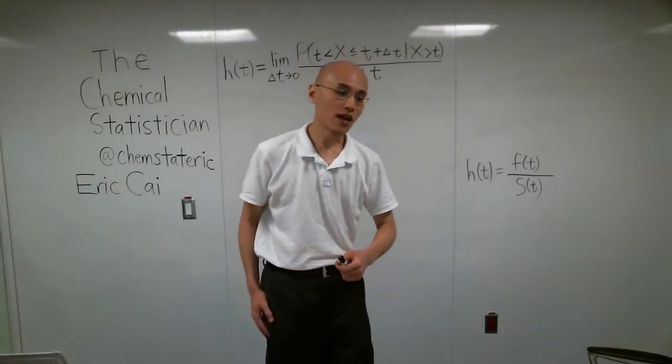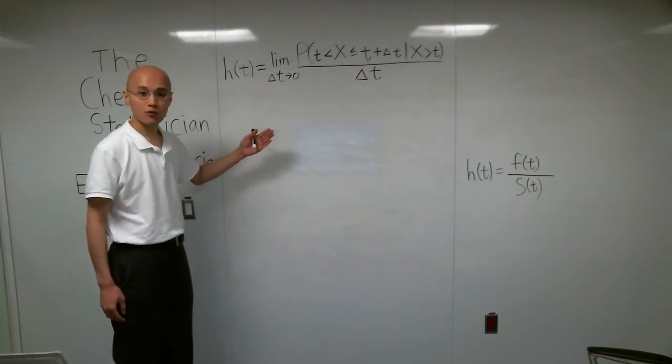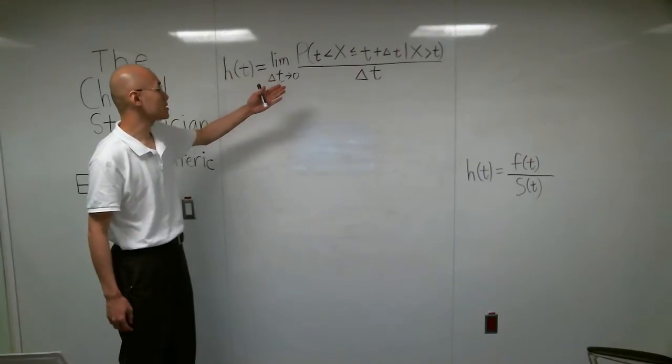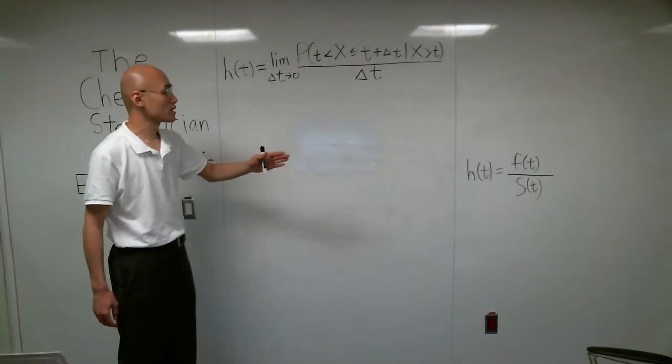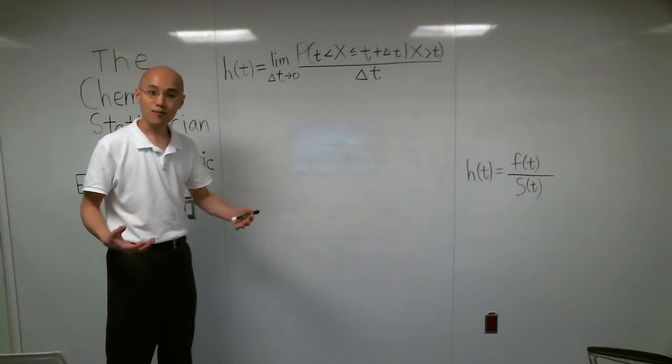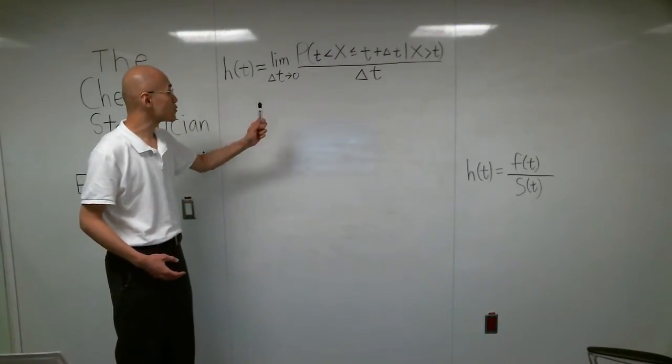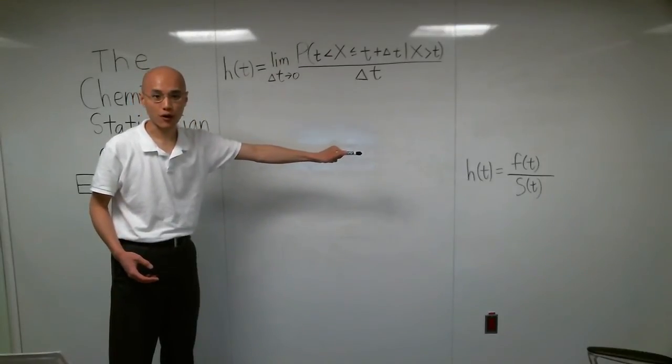Now, in that video, I defined the hazard function as the limit, as delta t goes to zero, of the probability that the event x happens in some interval between t and t plus delta t, conditioned on the event that x is bigger than t, all divided by delta t. That is a big mouthful, and my goal in this video is to show you that this complicated mathematical expression is exactly equal to that fraction down there.